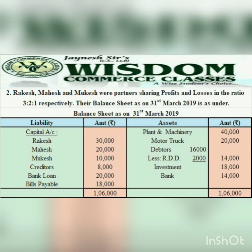Today we are going to start with Sum Number 2, given on page number 190 of the textbook. Rakesh, Mahesh, and Mukesh are partners sharing profits and losses in the ratio 3:2:1 respectively. The balance sheet is as on 31st March 2019. Capital is given for Rakesh, Mahesh, and Mukesh - these go on the credit side as liabilities. Bank loan also goes under liabilities.